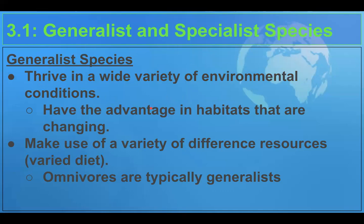Generalist species have the ability to thrive within a lot of different places — places that can vary in terms of conditions like temperature, rainfall, landscape, and plant species. These are the type of species that, given changing conditions, will be less negatively affected. Because they can thrive in a wide variety of conditions, when those conditions change, they will be more likely to be okay. They also have the ability to use a lot of different types of resources.